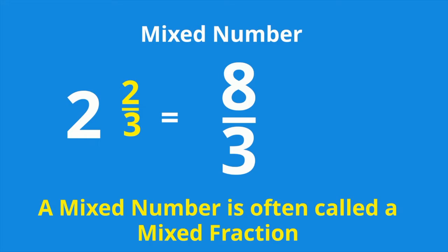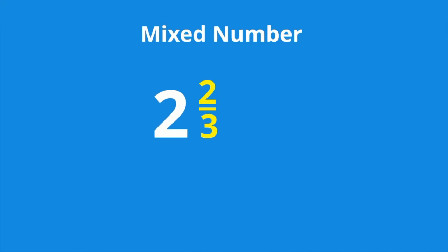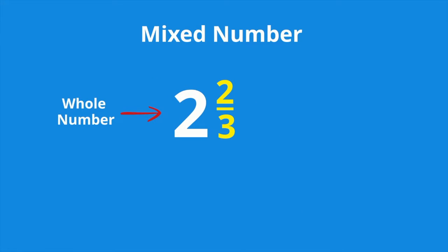Let's first dissect a mixed number. You have a whole number part and a fractional part. The denominator of the fraction tells you how many parts each whole number is worth.